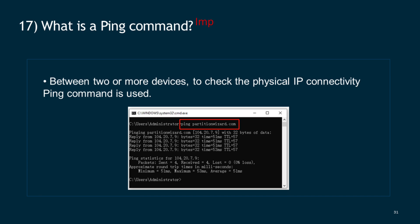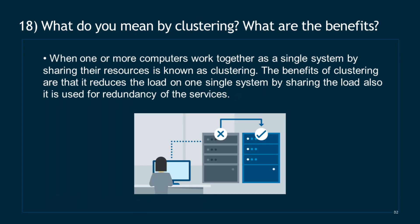Question 17: What is a ping command? Between two or more devices, the ping command is used to check physical IP connectivity. Question 18: What do you mean by clustering and what are the benefits? When one or more computers work together as a single system by sharing their resources, it is known as clustering. The benefits are that it reduces the load on a single system by sharing the load, and it is also used for redundancy of services.